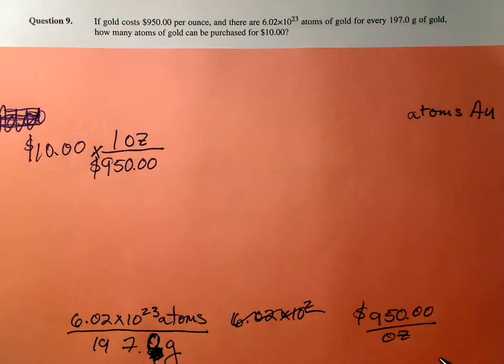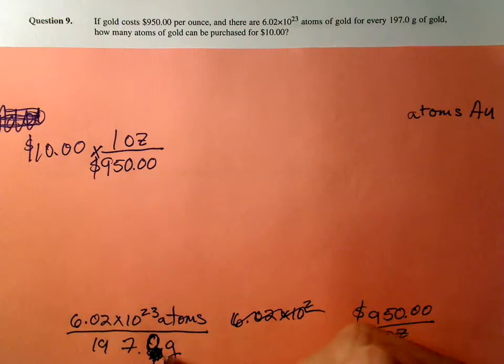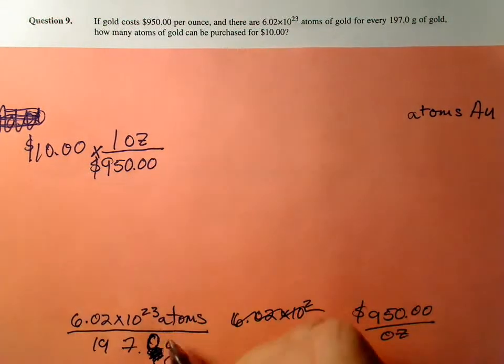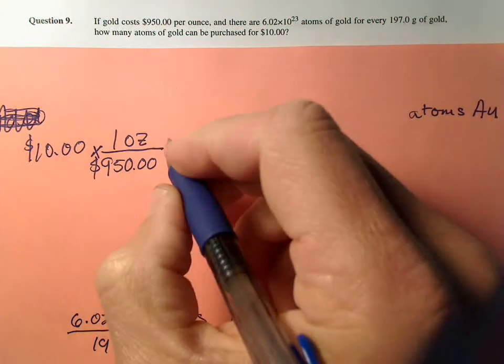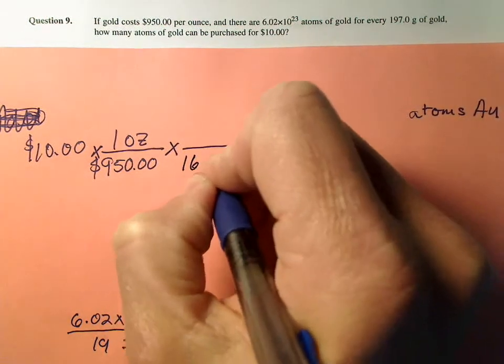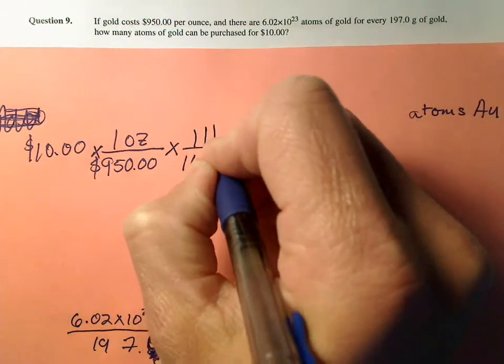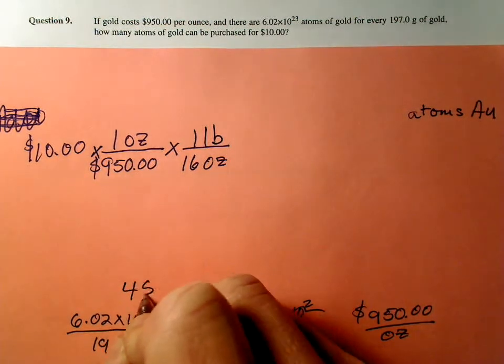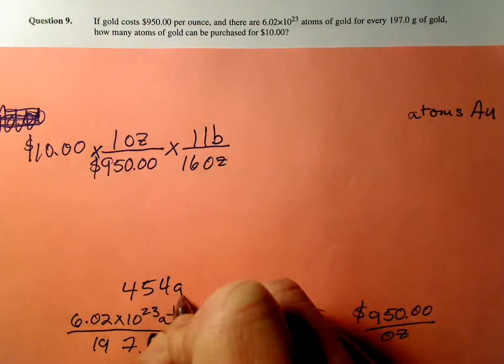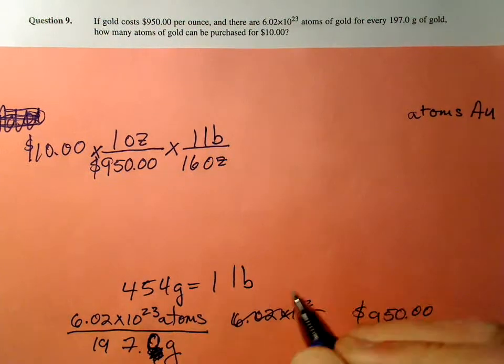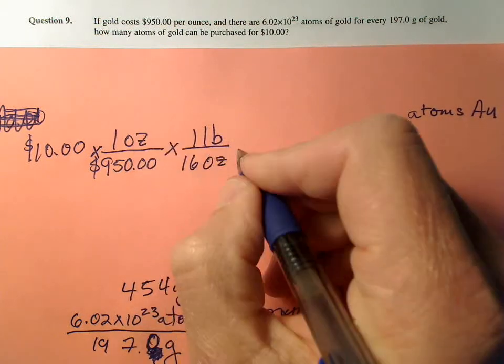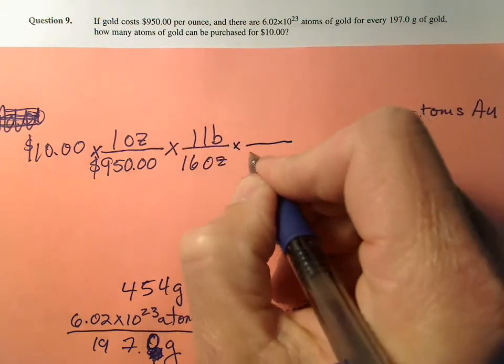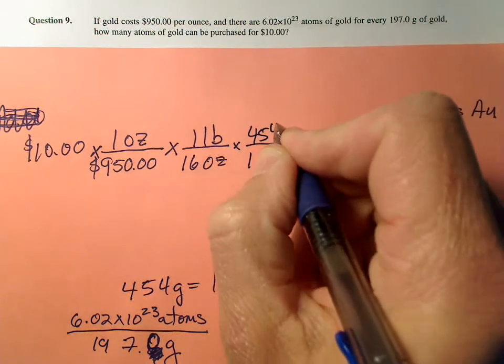Alright, so now I'm into mass units. Do I have any mass atom conversions? Oh yeah, I got a gram atom. So my next job is to figure out how many grams this is. I don't know how many grams are in an ounce, so I'm going to say 16 ounces is one pound, because I know that 454 grams is one pound. Then I can get there. So now I have pounds, and one pound is 454 grams.